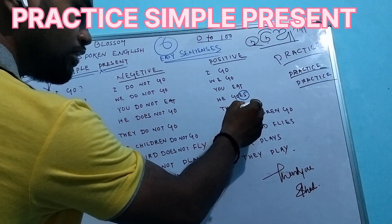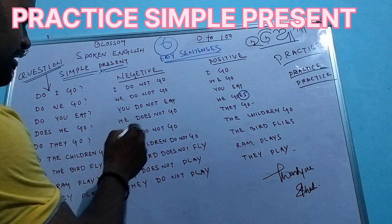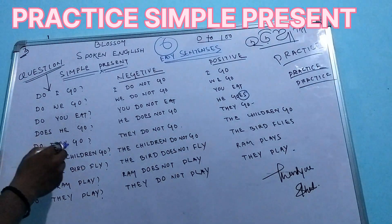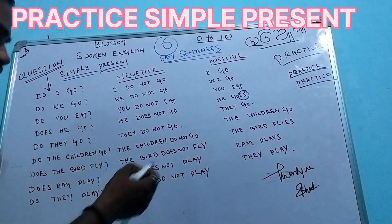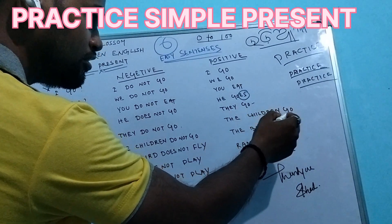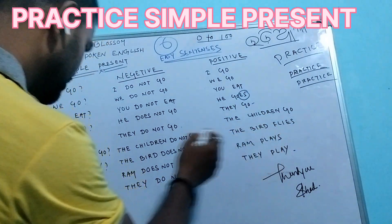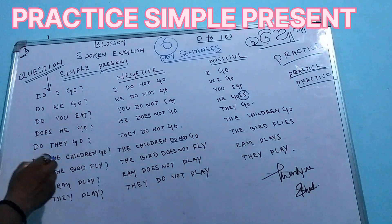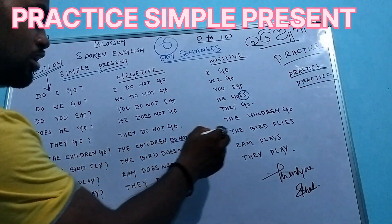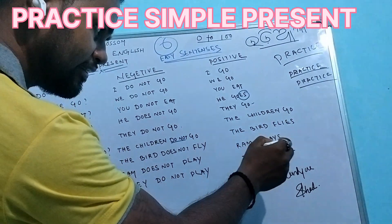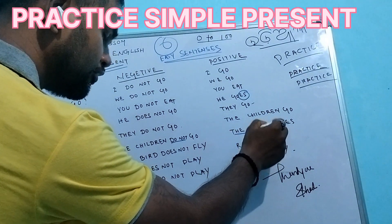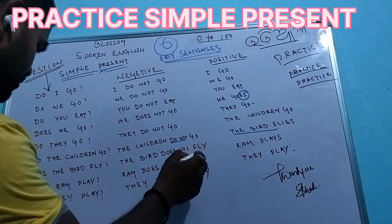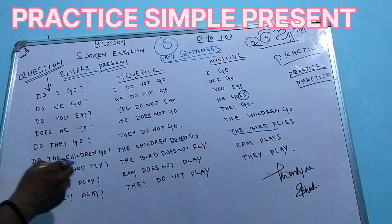3rd person plural: They go. They do not go. Do they go? The children go. The children do not go. Do the children go? The bird flies. The bird doesn't fly. Does the bird fly?